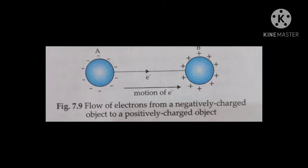To keep this flow of electrons — that is, to maintain the flow of current — it is necessary to maintain an excess of electrons on one object and a deficit on the other. This is done in an electric cell by a chemical reaction in the electrolyte.